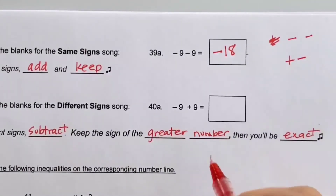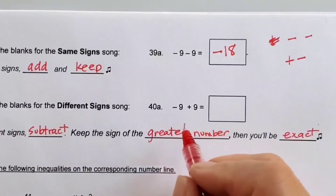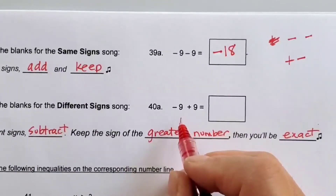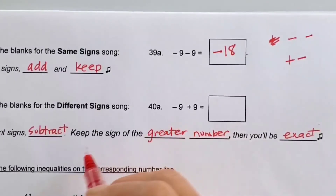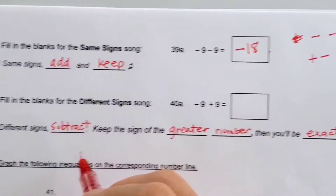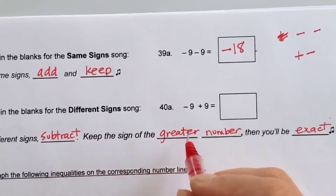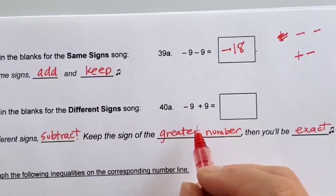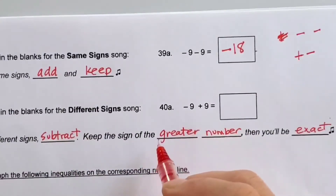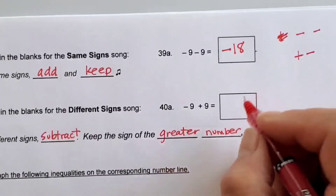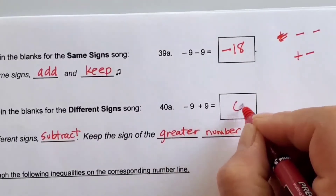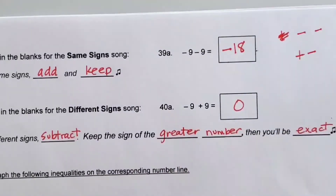For number 40A, you have different signs. The rule is: different signs, subtract. So 9 minus 9 is 0. Keep the sign of the greater number, then you'll be exact. So negative 9 plus 9 is 0 — they cancel each other out.